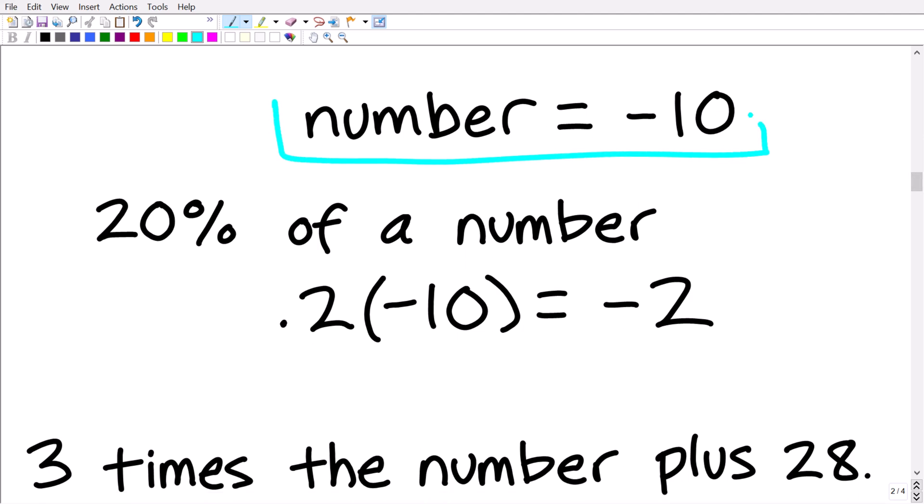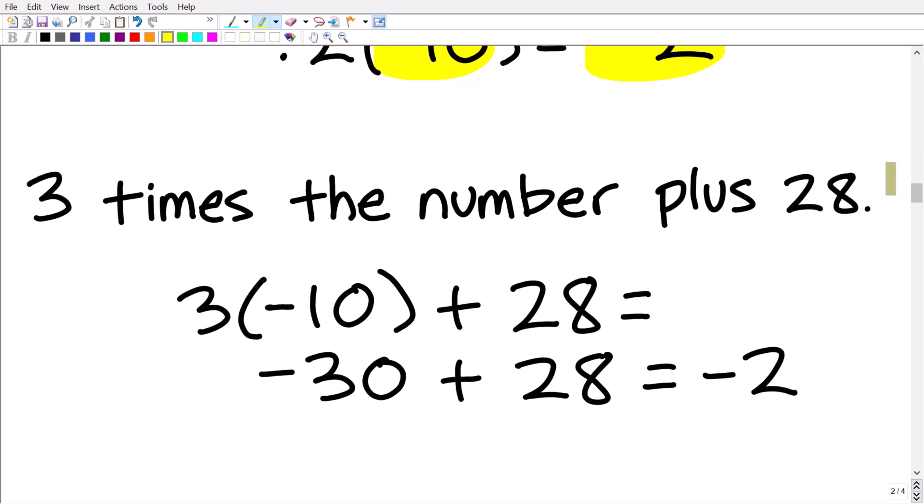So this number is negative 10, or at least we think it is. So 20% of this number is what? Well, if the number is negative 10, it's going to be 0.2 times negative 10. So 0.2 times negative 10 is negative 2. Okay, so that is what the left-hand side of this equation is, or the left-hand side of this problem is. So 20% of this number negative 10 is negative 2. So let's see if it's the same thing as 3 times the number plus 28.